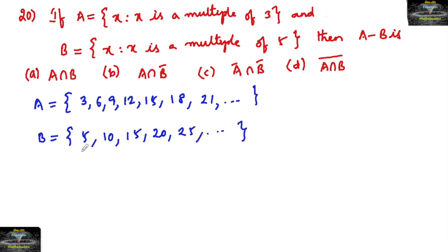And now according to the question A minus B we can write means multiples of only 3, which are not included in B.